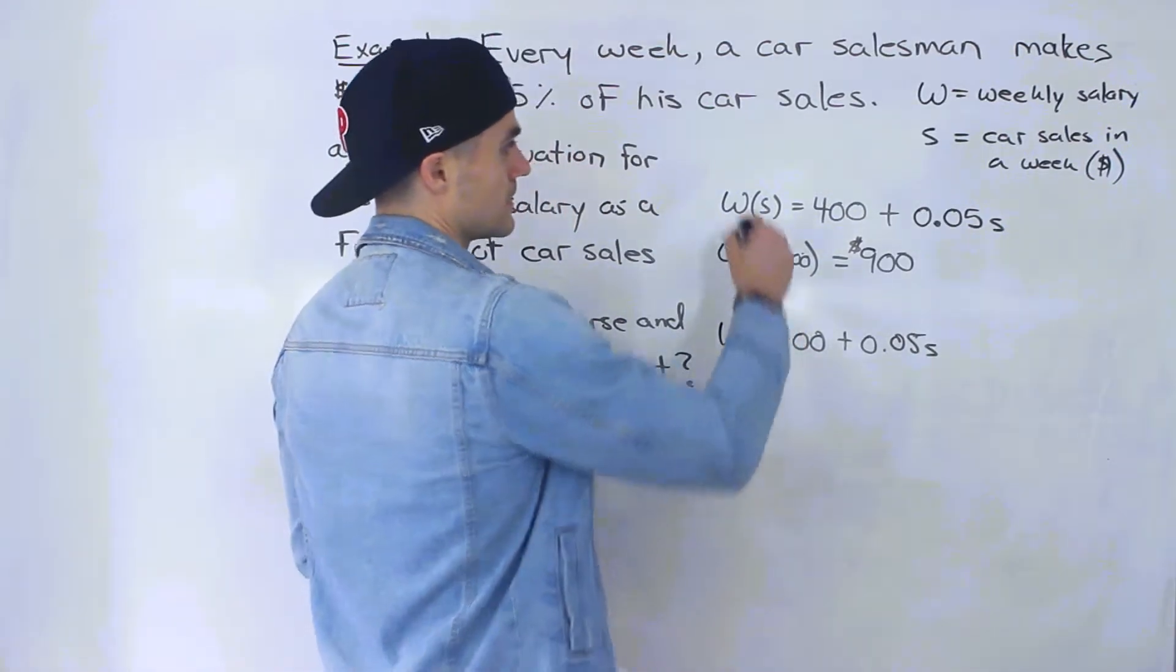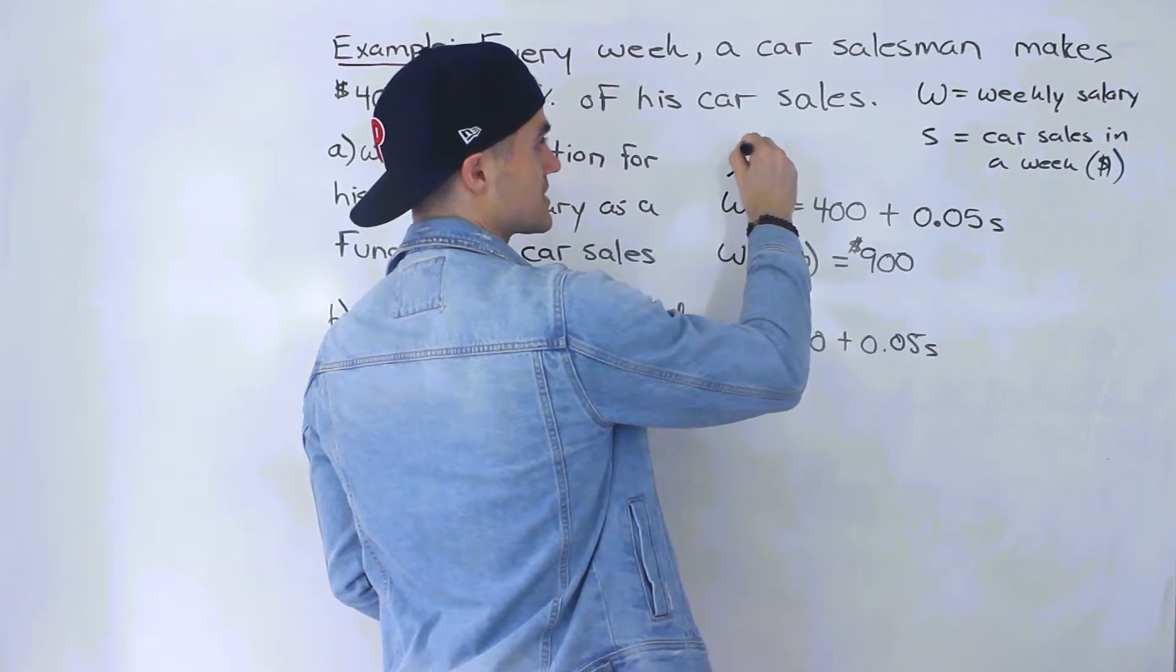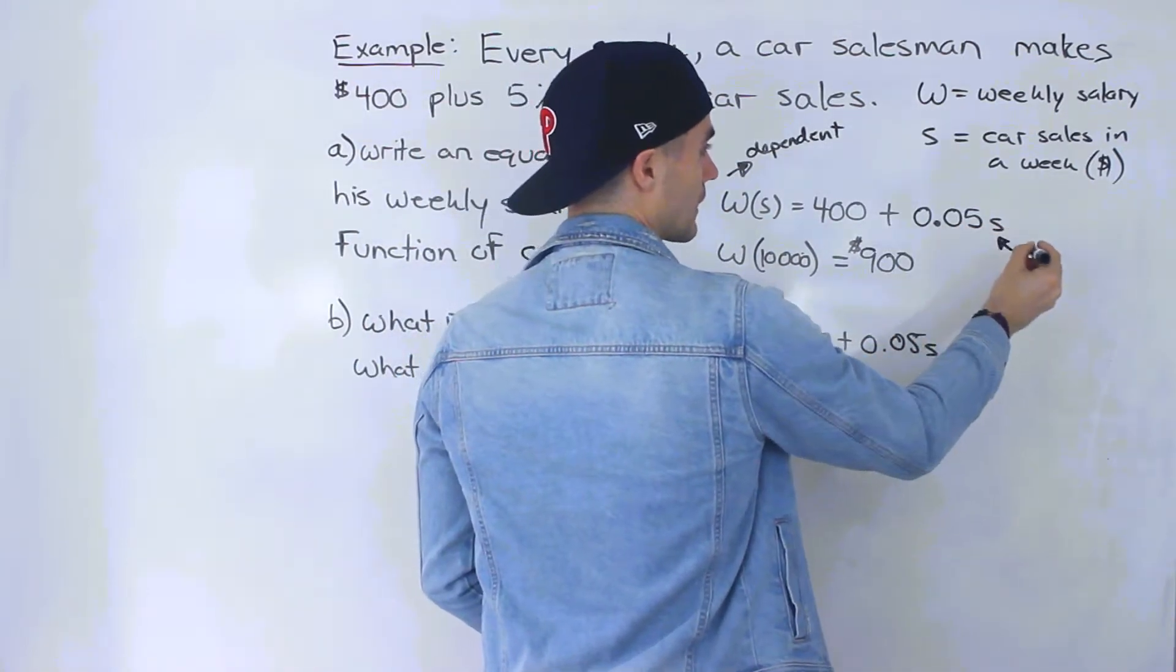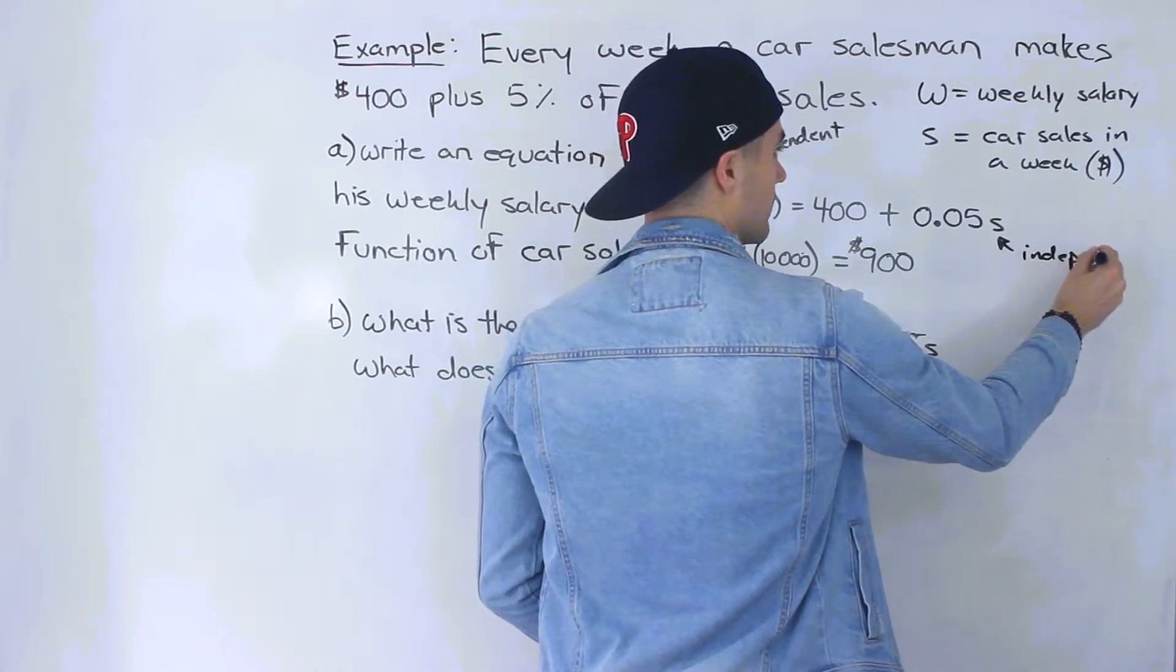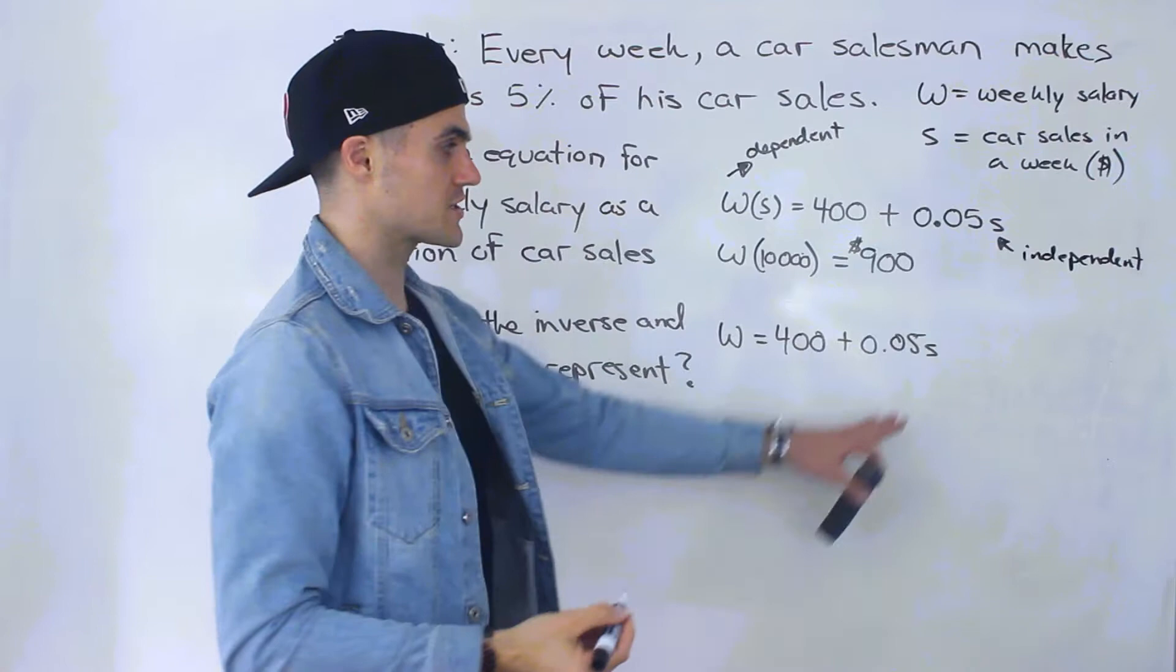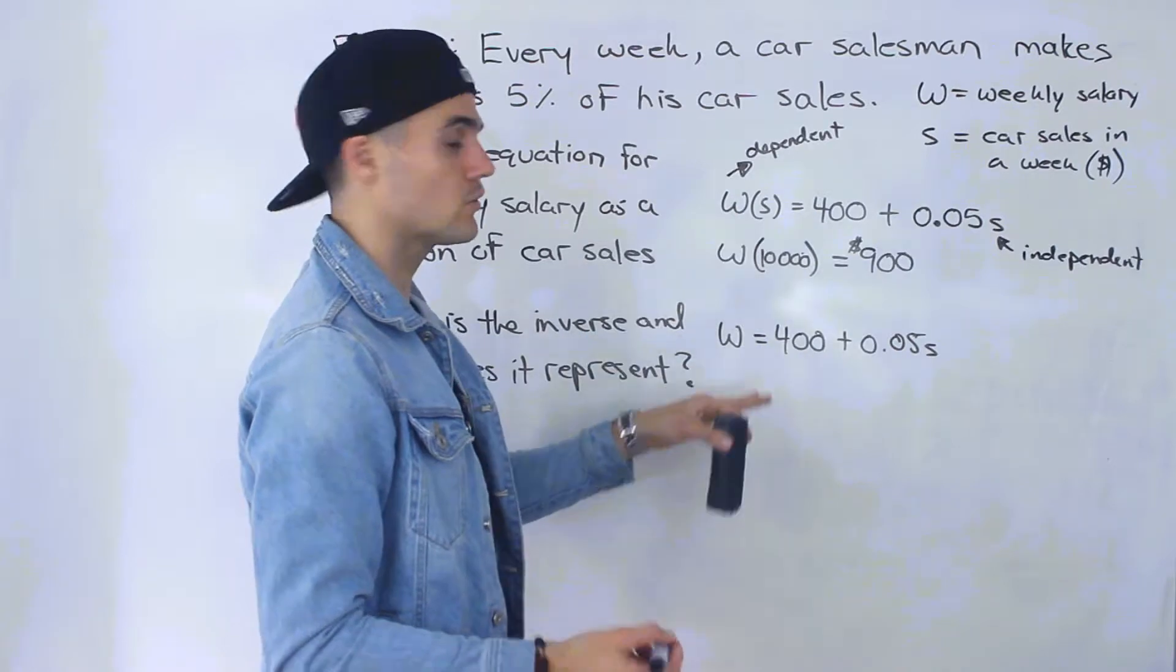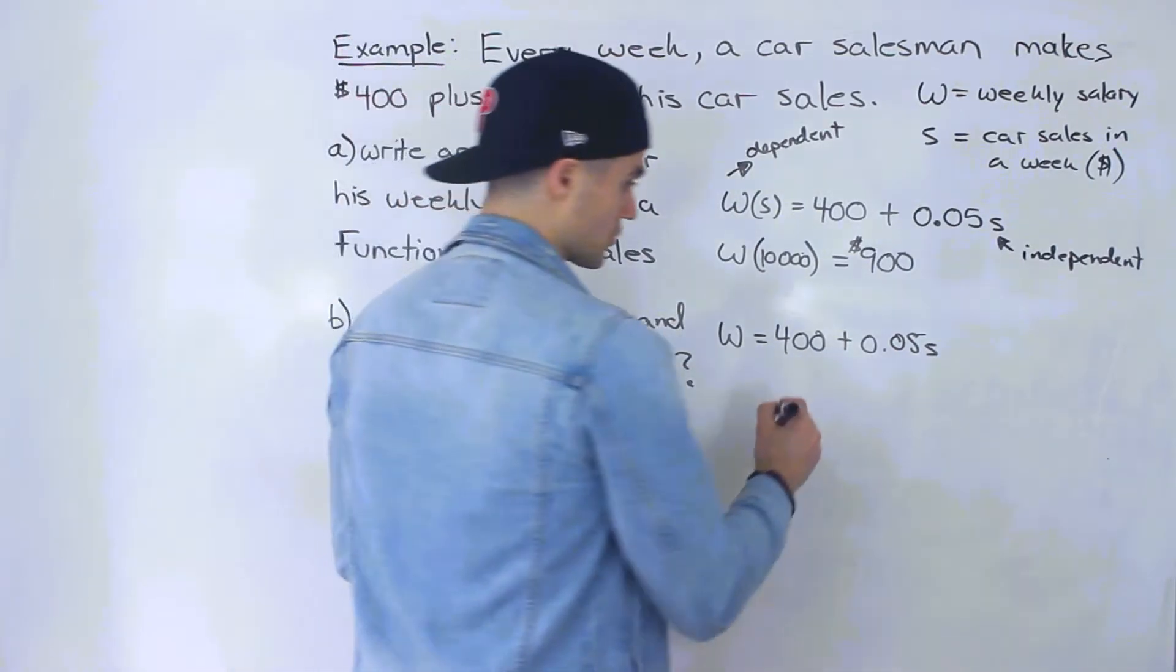So notice with the function, with the original function, the weekly salary was the dependent variable and then the car sales was the independent. So because this is a word problem, we're just going to isolate for that S, and now that S is going to become the dependent variable, and then the W, the weekly salary, is going to become the independent variable. So let me show you how that works.